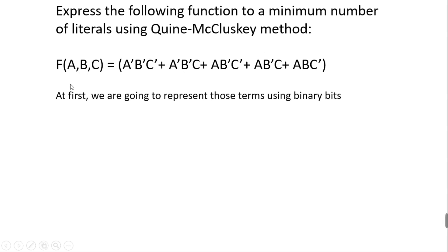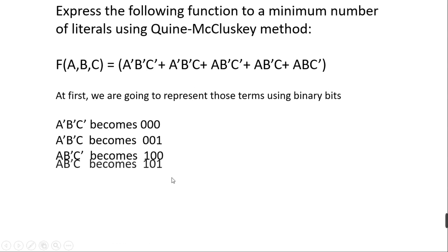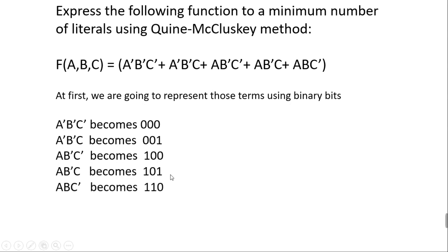First, I'm going to represent those terms using binary. A'B'C will become 0 0 0, and A'B'C will become 0 0 1. I'm following a simple rule: when there is a prime I'm putting zero, and when there is no prime I'm putting one. Similarly, I'll be representing all of those terms in binary.